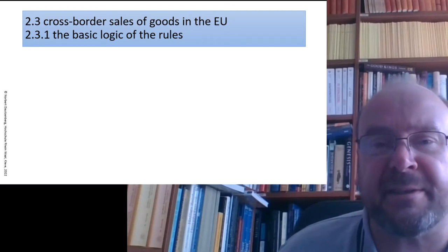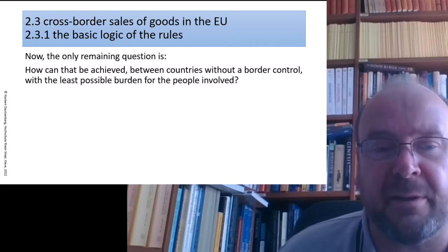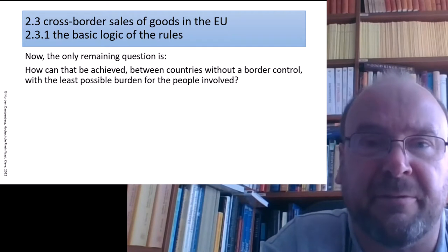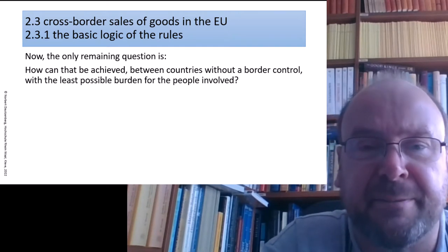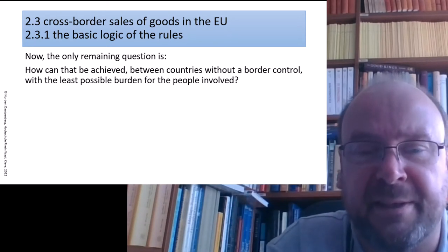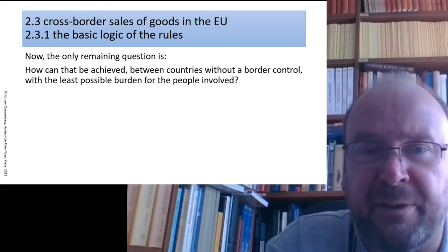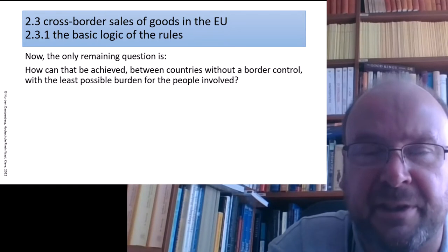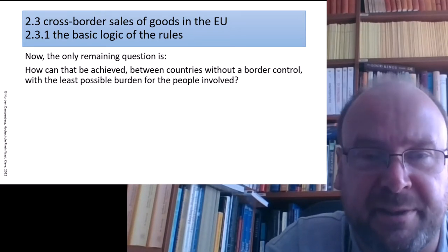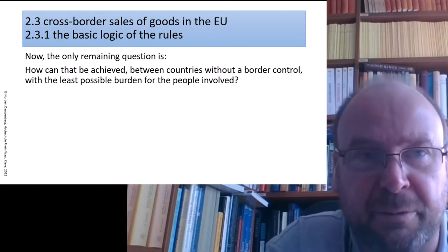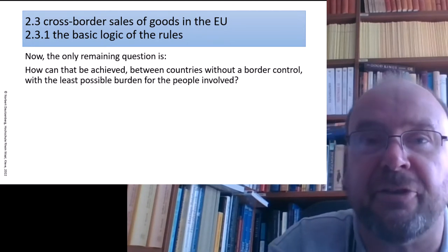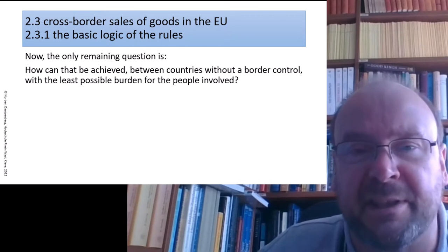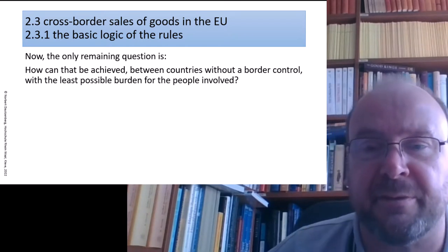Now what is very special in the EU? The problem is you have abolished the border controls between Germany and France, France and Spain, and all these states. The goods can freely flow over the border. So how can you now ensure taxation in the country of destination when you can no longer have checks at the border? How can such a system be established — that every good a German sells to France is taxed in France and not in Germany — and with the least possible bureaucratic burden for the people involved?